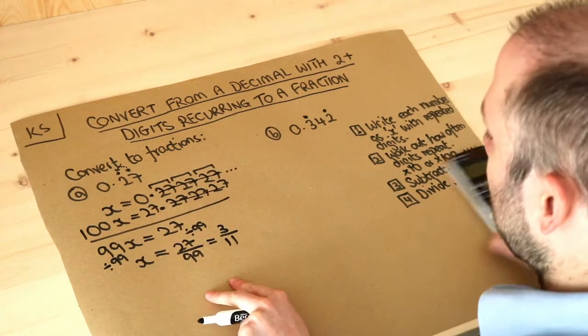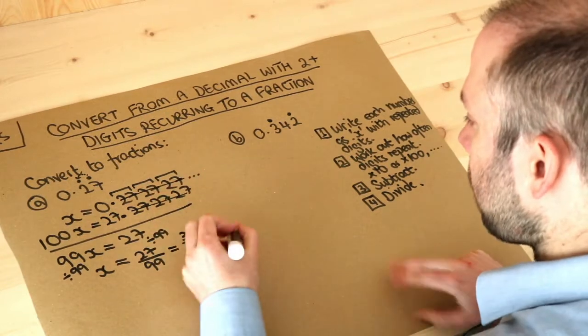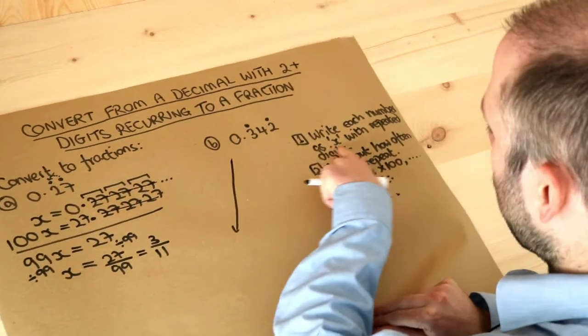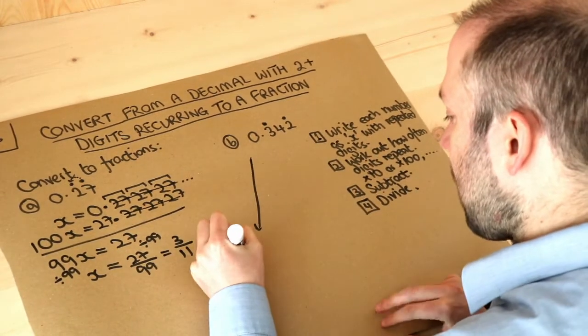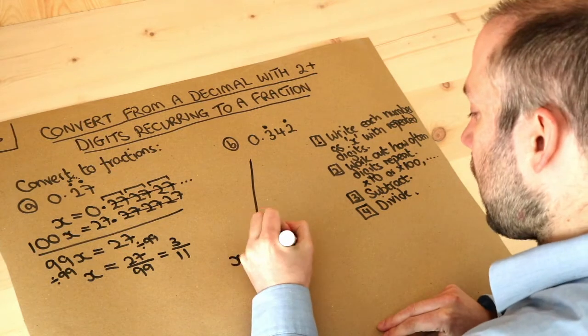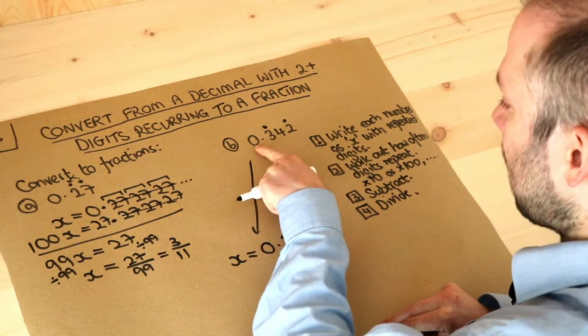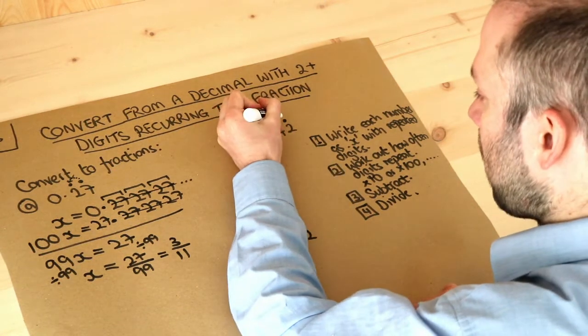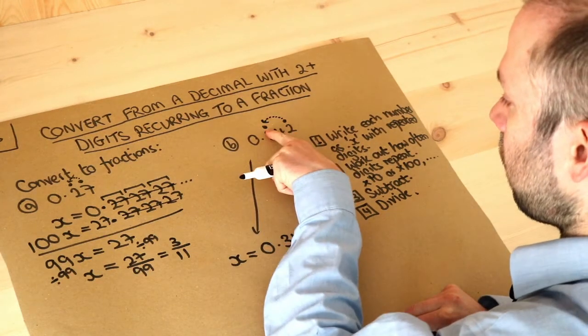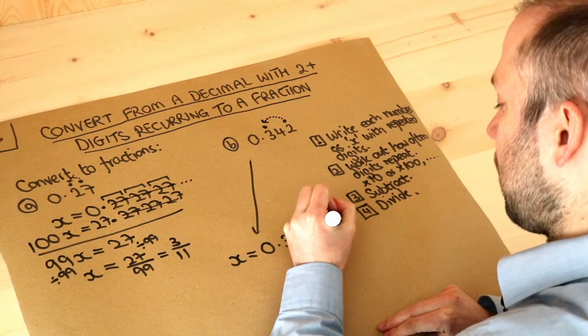Now what about the second one? I'll write it down here to leave some space, and again I'm going to do step one. We write this number as x: x equals 0.342, and then as I said once we get to the second dot we go back to the first dot here, so 0.342 342 342 342 twice.